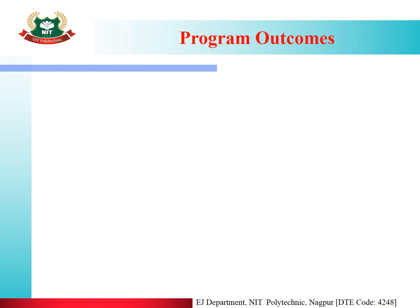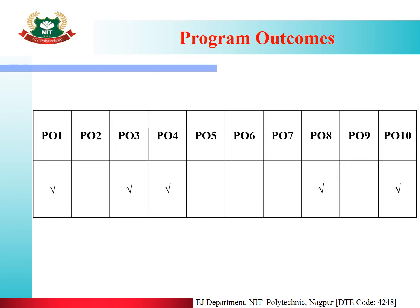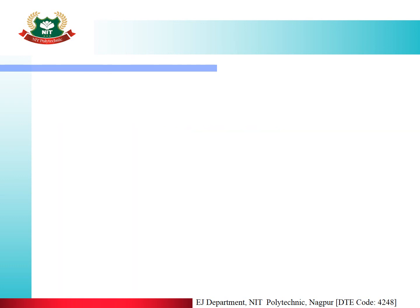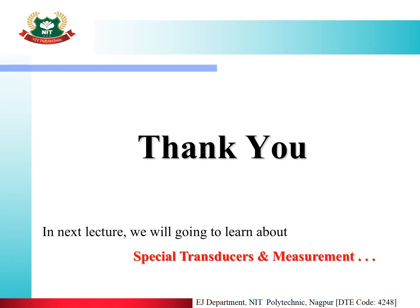Program outcomes: in the EMI subject there are 10 POs (PO1 to PO10). Today's lecture topics map to PO1, PO3, PO4, PO8, and PO10. Summary: today we covered flow measurement, venturimeter (variable head flow meter), and rotameter (variable area flow meter). In the next lecture, we will learn about special transducers and measurement, the last topic of Unit 5.